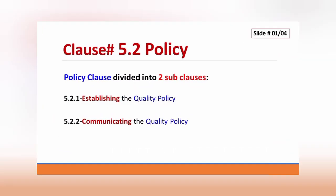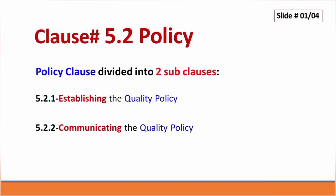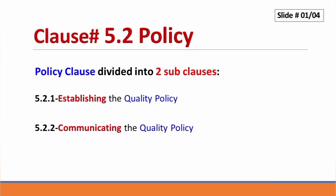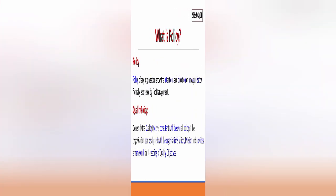In this video, we will be talking about the ISO 9001 Quality Management System, class 5.2 Policy, which is divided into two sub-clauses: 5.2.1 Establishing the Quality Policy, and 5.2.2 Communicating the Quality Policy. This class is very important in ISO 9001 Quality Management System, which emphasizes and bounds the top management to establish, implement, and maintain a quality policy for the organization.